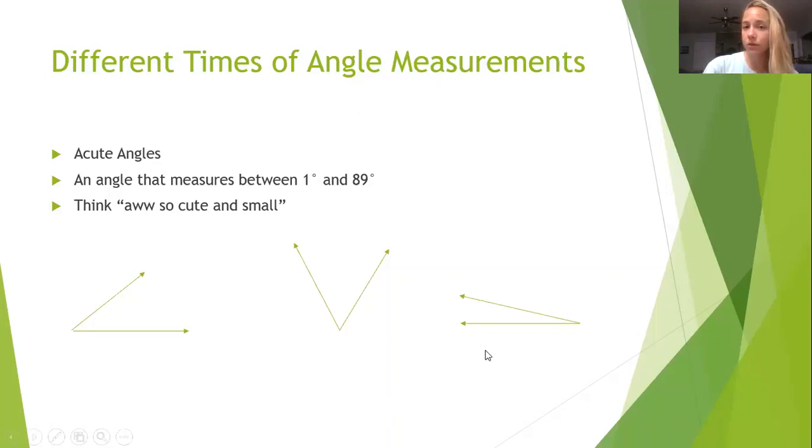A way you can remember that acute angles are small angles is you say, aww it's so acute, so cute. So typically when you think of small things they're cute like babies and puppies, so think of the acute angles as the small cute angle.